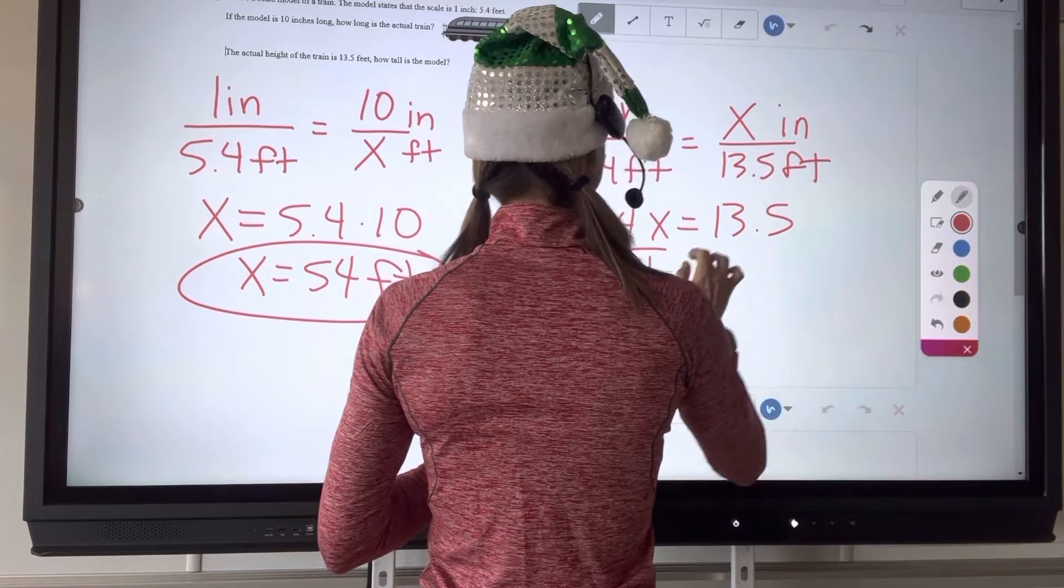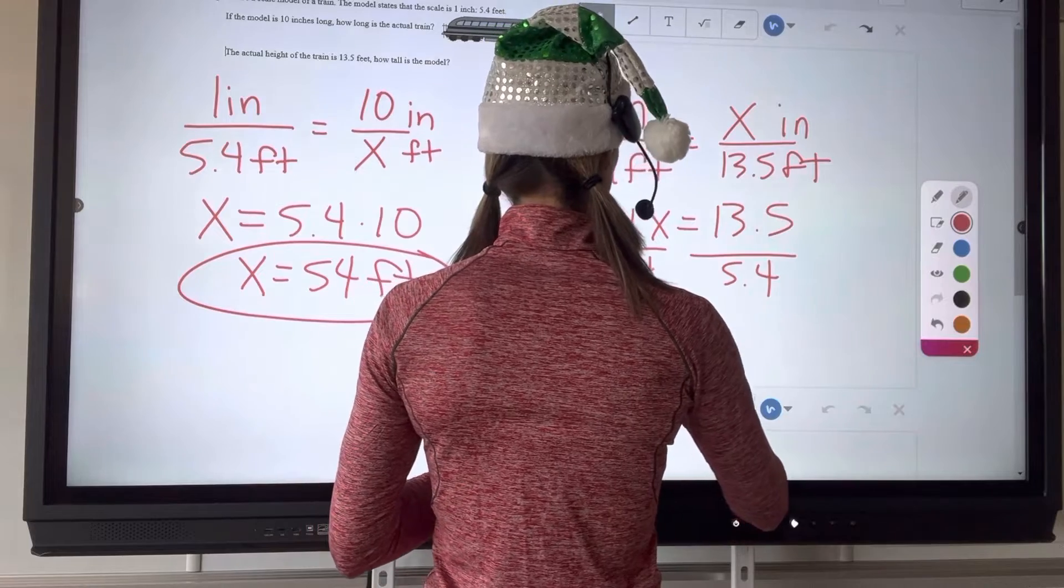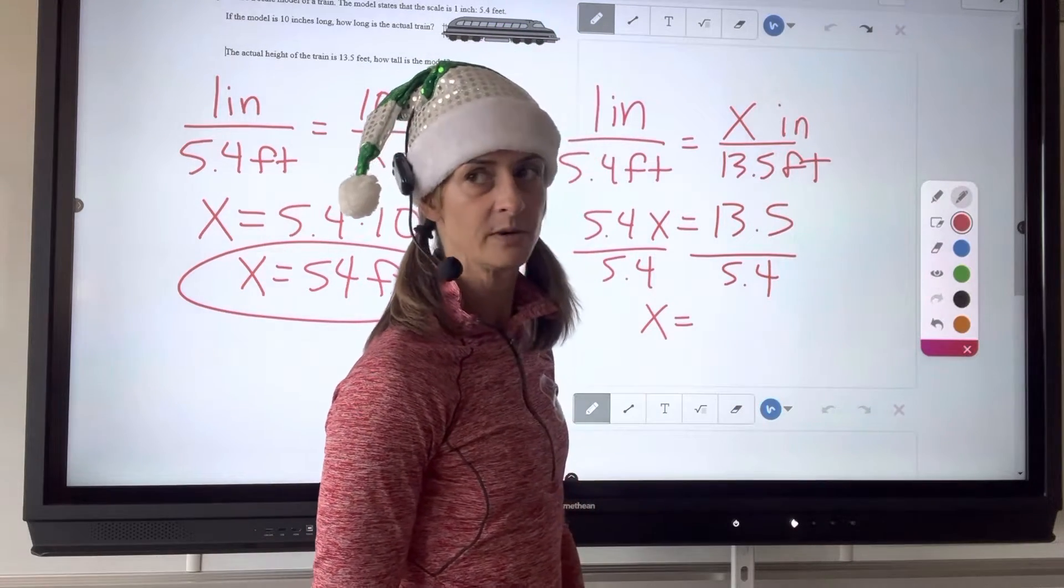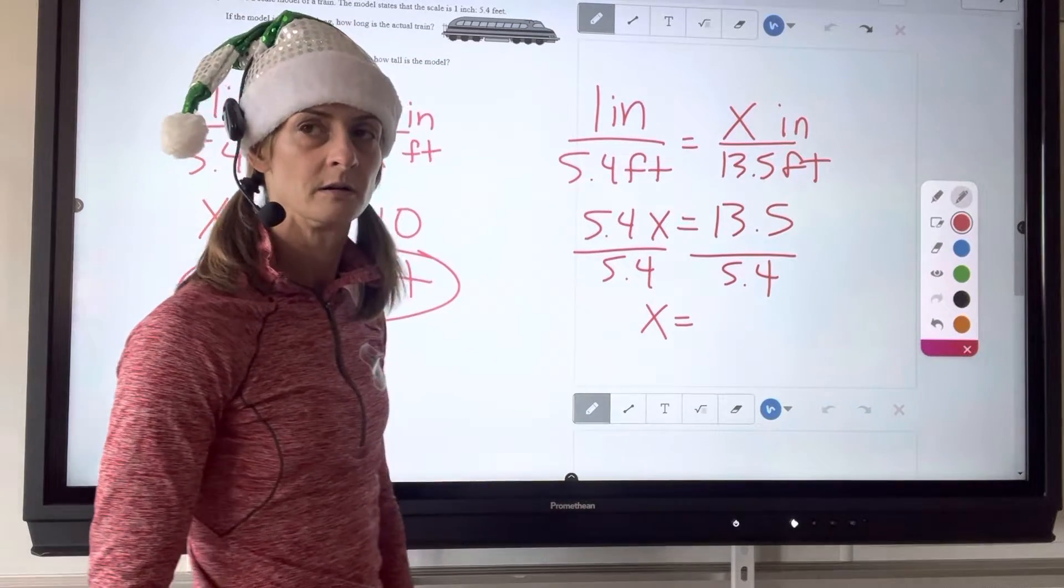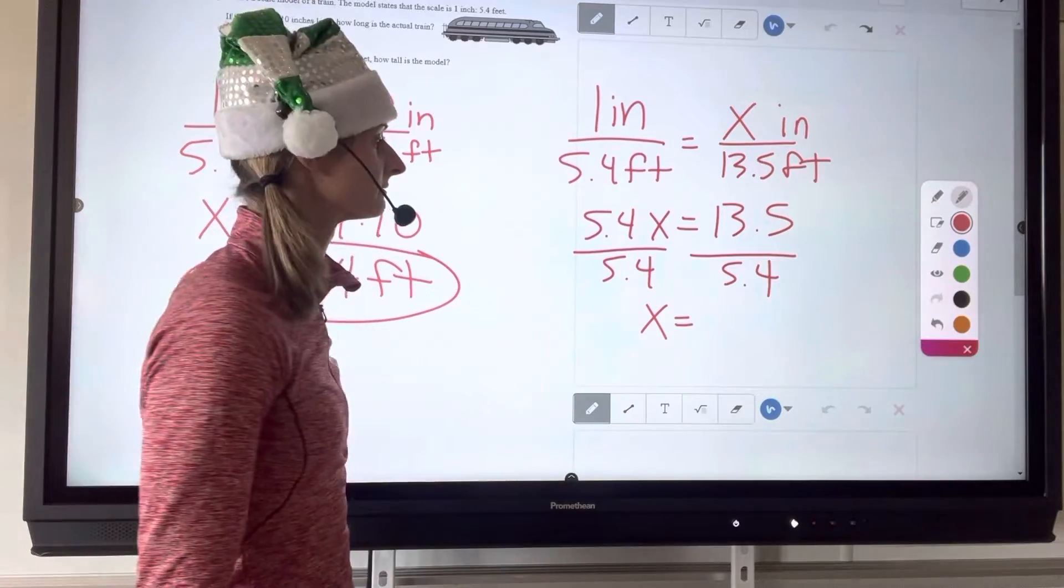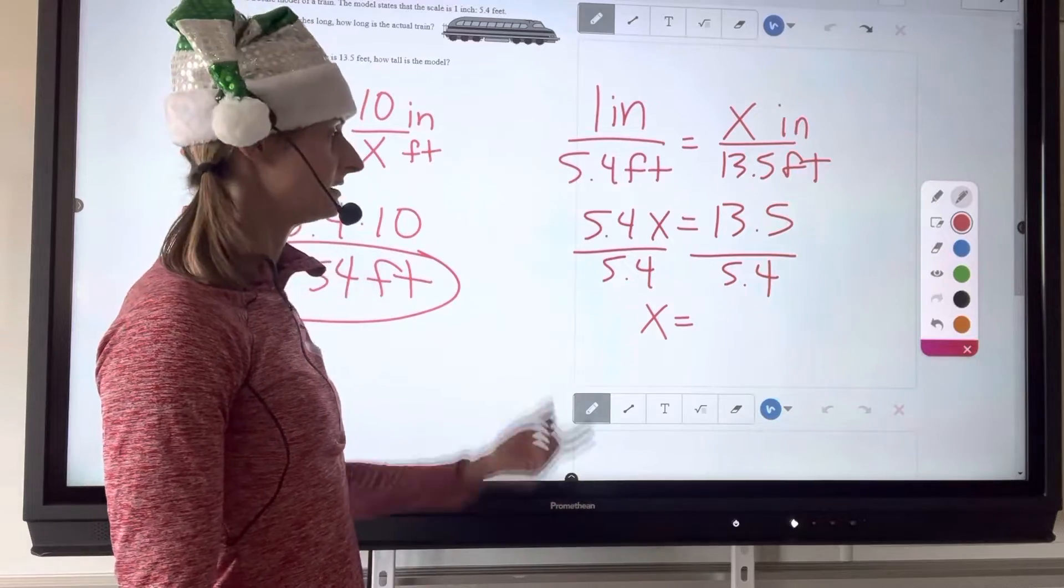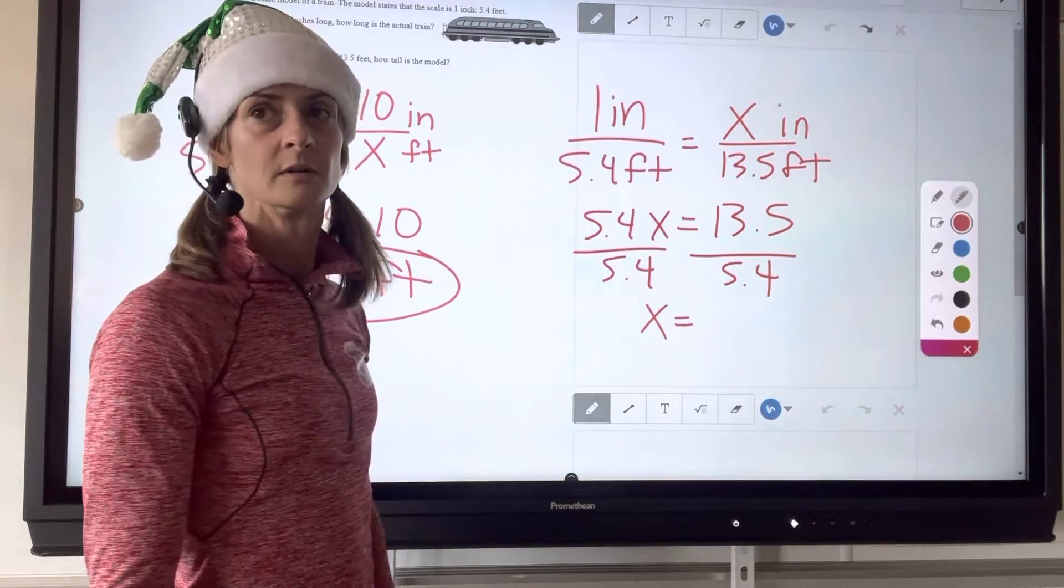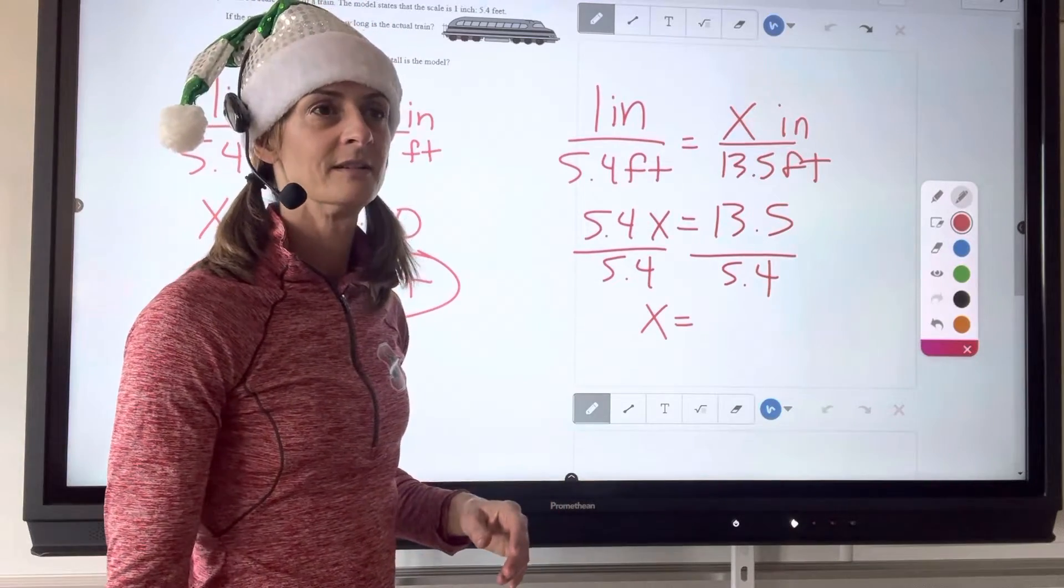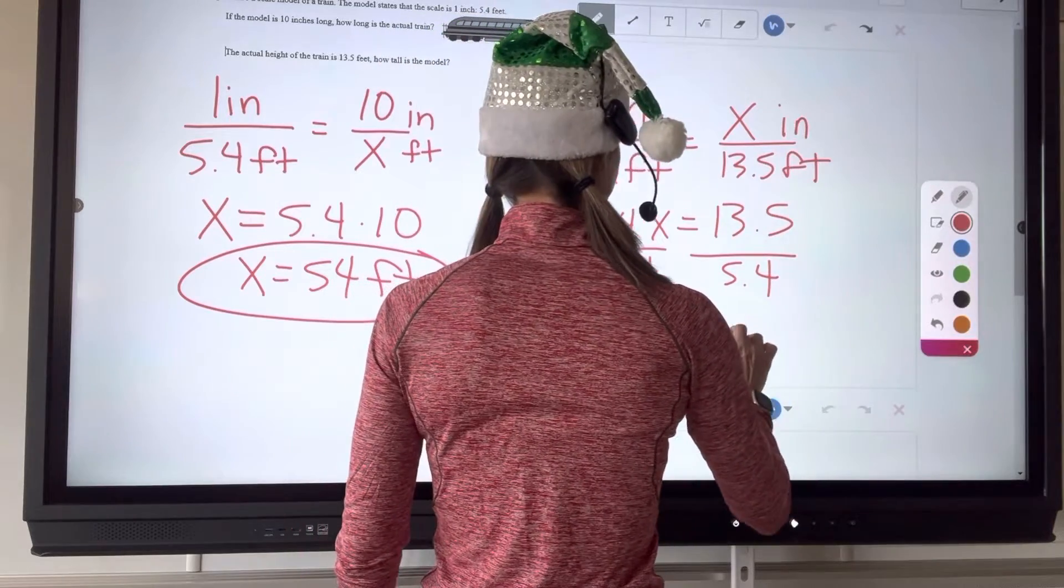What's 13.5 divided by 5.4? What'd you get? 2.7. Anyone else? I got 2.48. Let's, somebody else check it. I mean, do it with the calculator just so we can confirm the right number because I didn't do it. So 13.5 divided by 5.4. 2.5. 2.5. 2.5. 2.5. Okay.